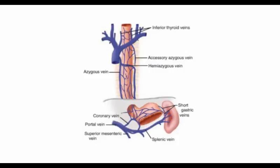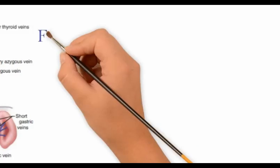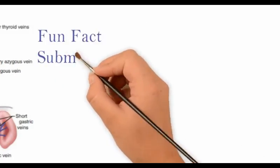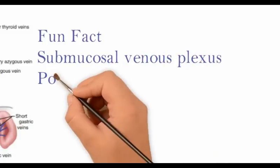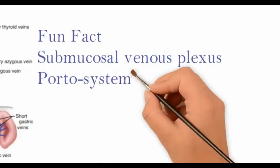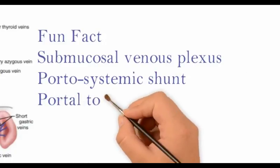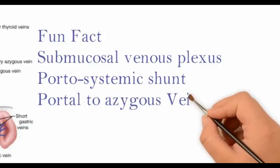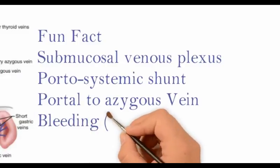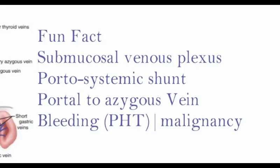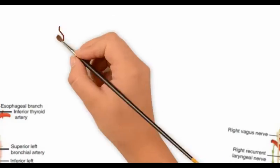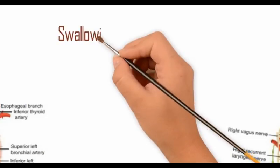The venous drainage of the esophagus is mainly through the azygous and hemi-azygous veins into the IVC. The submucosal venous plexus in the esophagus connects the coronary vein and short gastric veins to the portal system and superiorly to the azygous system, creating a portal-systemic shunt. This explains how malignancies can spread directly into the liver and how this area is affected during portal hypertension.